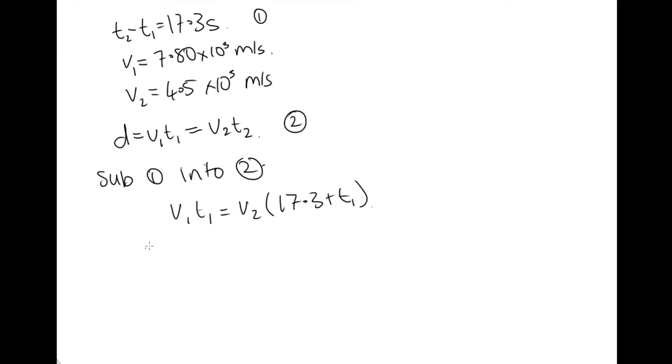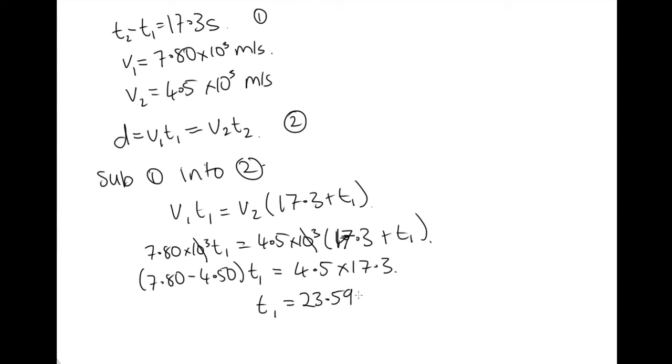Substituting in our values, we've got 7.80 times 10 to the 3 t1 equals 4.5 times 10 to the 3 times 17.3 plus t1. Let's cancel out our 10 to the 3s. Now we can rearrange this to find t1. We've got 7.80 minus 4.50 t1, moving this term over to this side, equals 4.5 times 17.3. So t1 equals 23.59 seconds.